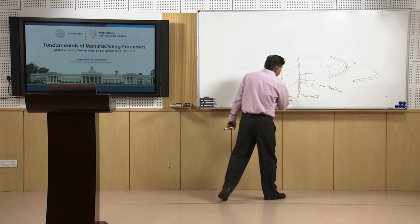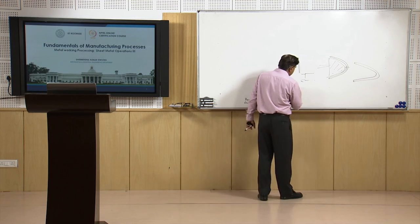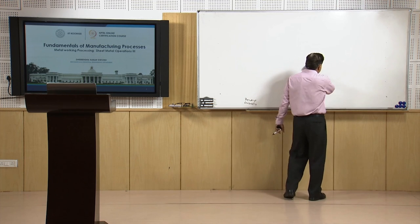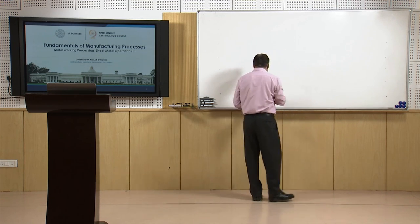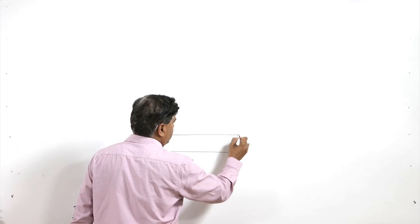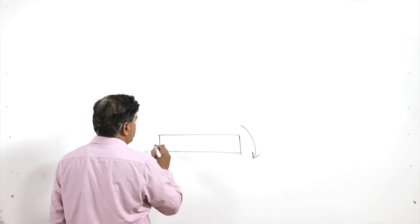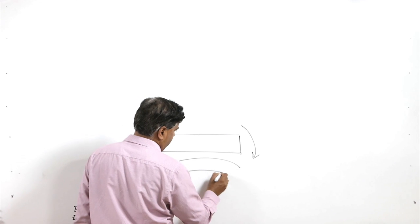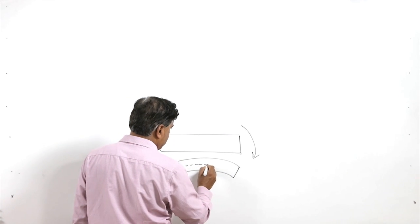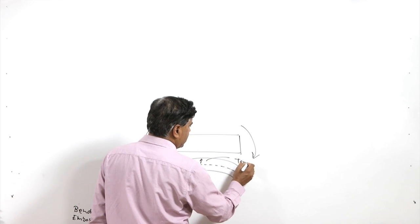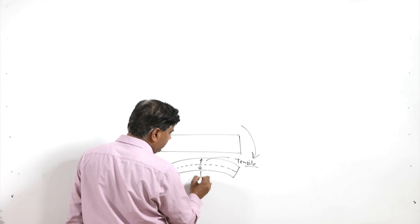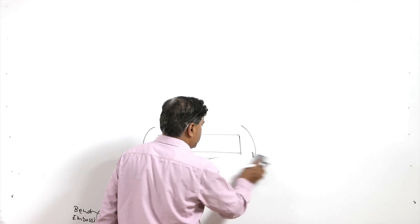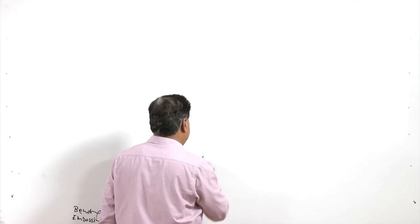Another sheet metal operation is bending. Under normal conditions, when a sheet metal or plate is subjected to bending about the neutral axis, different zones are subjected to different kinds of stresses. For a simple plate subjected to bending, about the neutral axis, above the neutral axis tensile stresses will be acting, below the neutral axis compressive stresses will be acting, and at the neutral axis there will be no stresses under bending conditions.